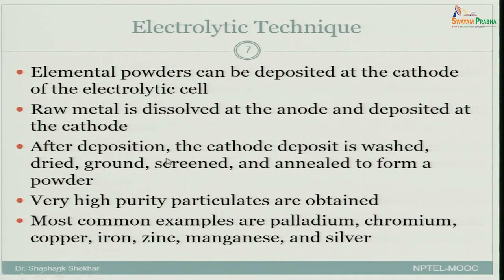You can first take it away, dry it, grind it, screen it, and then anneal it to form the powder. You are not really doing any additional step to make it a powder — it is not that you have obtained bulk material and then reduced it to powder. It is already very much in close to powder state, like agglomerated powder.